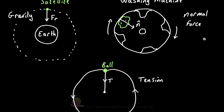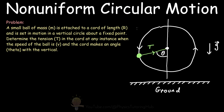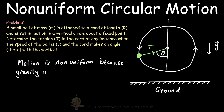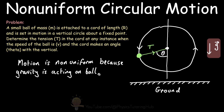Now let's apply what we've learned. A small ball of mass M is attached to the end of a cord of length R. This ball is swung in a vertical circle about a fixed point. Our goal is to determine the tension in the cord at any instant when the speed of the ball is V — noting that this speed changes along the path, as this is non-uniform circular motion — and when the angle theta with the vertical is known.